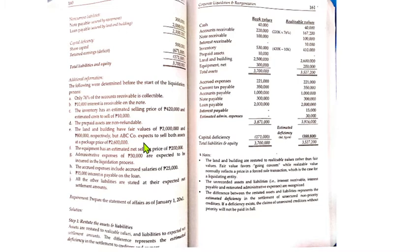Item E: the land and building have a fair value of 2,800,000, but because we are a liquidating entity expecting to sell both assets at a package price of 2,600,000, that is the realizable value we use — 2,600,000 — since that is what we expect to receive right now. Item F: the equipment has an estimated net selling price (already net of cost to sell) of 200,000, so 200,000 is the realizable value. Total realizable value of assets is 3,527,200.